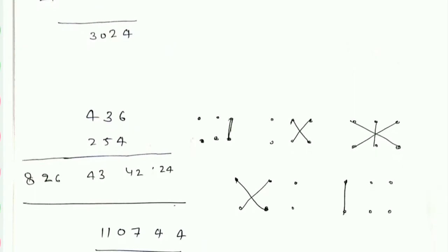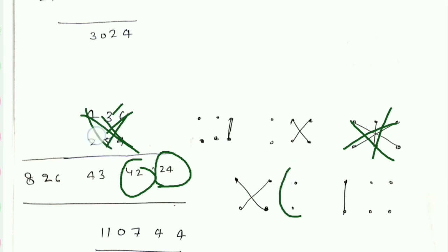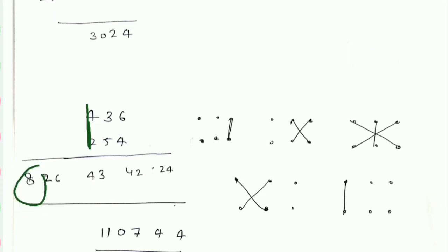यहाँ पर multiply में 3 digit है तो 3 digit into 3 digit का multiplication है। यहाँ हम same process रखेंगे — पहले जो unit digit है उनको multiply करेंगे: 24। फिर 6 into 4। फिर 2 को देखेंगे: 3 into 4 और 5 into 6 add कर देंगे — 42। फिर 3 का देखेंगे: वो 43। फिर cross elements लेंगे — 5 into 4 और 3 into 2 add कर लिया। फिर सिर्फ इसको multiply करेंगे: 4 और 2 = 8।